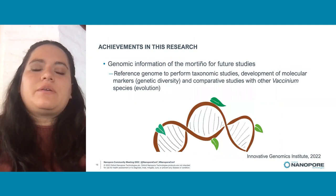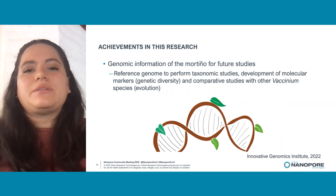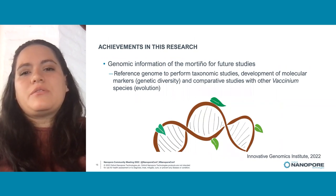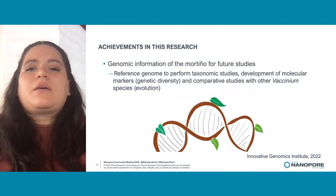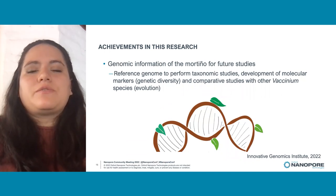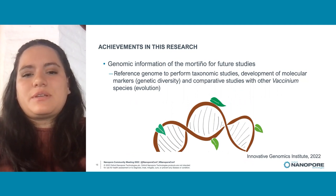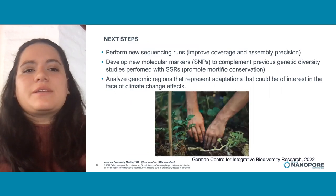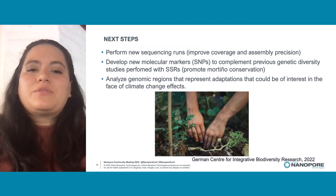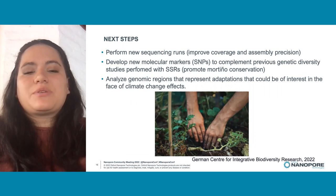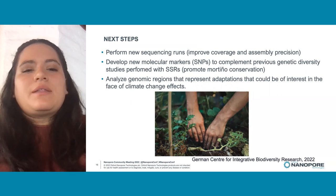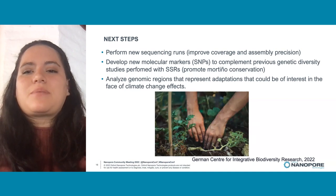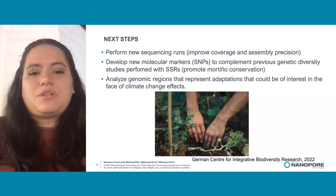With this research, we have generated genomic information for Mortiño to support future studies, such as the development of molecular markers for genetic diversity studies, taxonomic studies, and comparative studies with other Vaccinium species. The next steps are to perform new sequencing runs to improve coverage and assembly precision, develop new molecular markers such as SNPs to promote Mortiño's conservation, and analyze genomic regions that could represent adaptations of interest in the face of climate change effects.